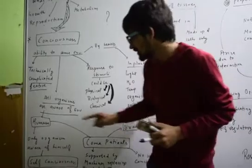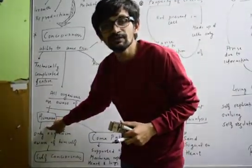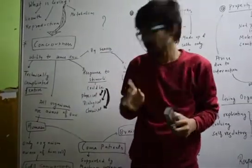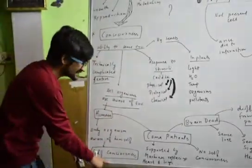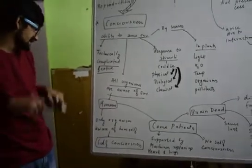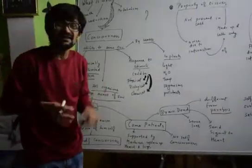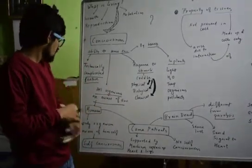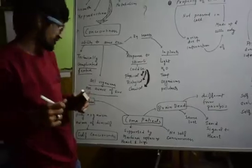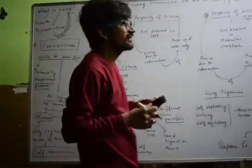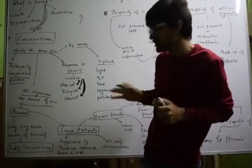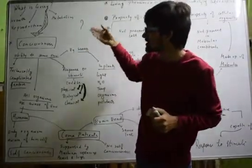Humans are the only organism which is aware of themselves. That's why we call human beings self-conscious organisms — they have the capacity to be aware of themselves and the environment around them. Now there is an important point I would like to discuss about coma patients. Coma patients play a vital role in understanding the difference between the conscious and non-conscious.